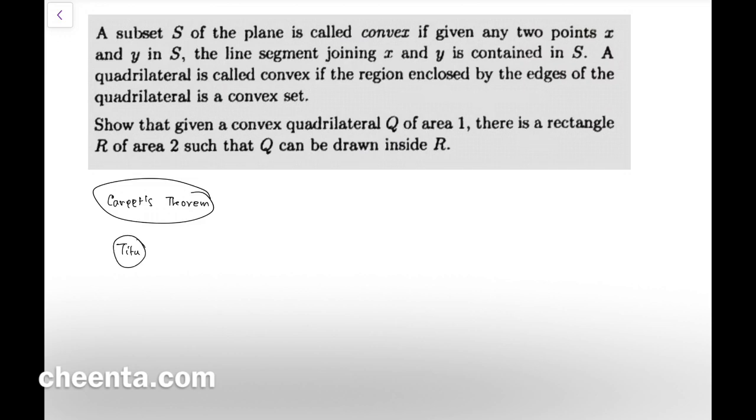The carpets theorem has this kind of area problem, though this is not particularly solved using carpets theorem, but it's similar. What does it say? You are given a quadrilateral Q which is convex. So they have defined what is convexity. In short, convexity is this: the figure is convex if you take any two points inside the figure and join it by a straight edge, and that entire straight edge is inside that figure.